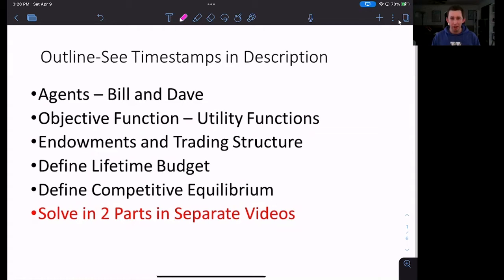What we're going to talk about today is the setup of that model. So we're going to talk about the two people in that model named Bill and Dave. We'll talk about their utility functions, how the world works under an Arrow-Debreu model, Bill and Dave's lifetime budget constraint, then we will formally define an Arrow-Debreu equilibrium and that's where we'll stop. We will solve this model in future videos, but today we are just setting up this model. Timestamps are below if you would like to jump around.